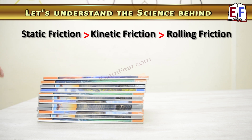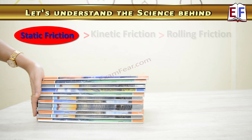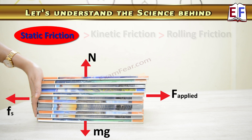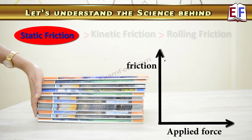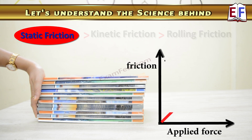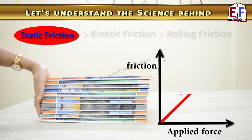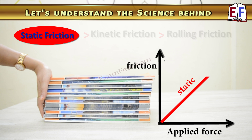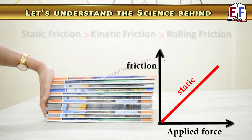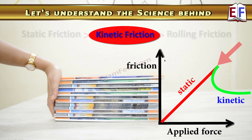Right now these notebooks are at rest. Now I apply some force at this end of the notebooks, but they do not move. Why? Because there is static friction acting in the opposite direction, which is not letting them move. As I increase the applied force, I gradually reach the value of limiting friction, when it actually starts to move. So this is the limiting value of static friction.